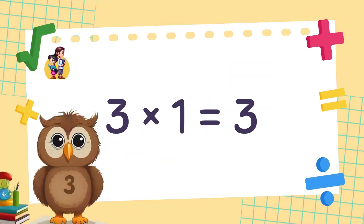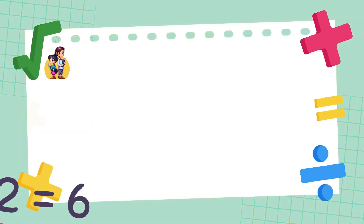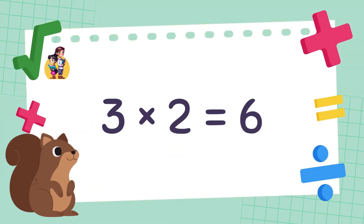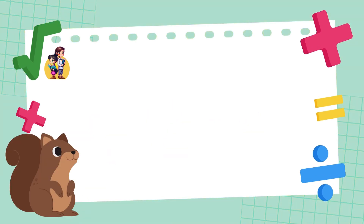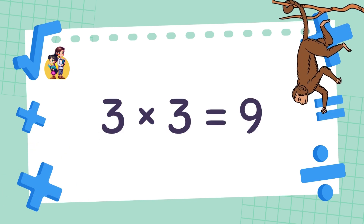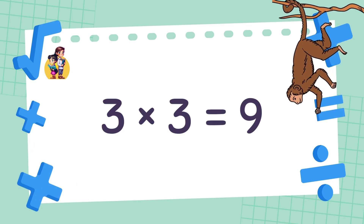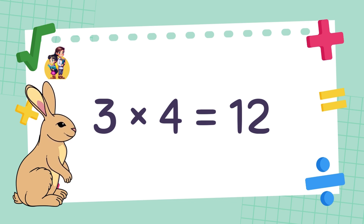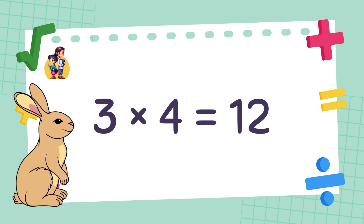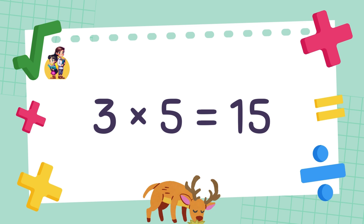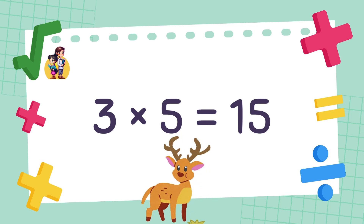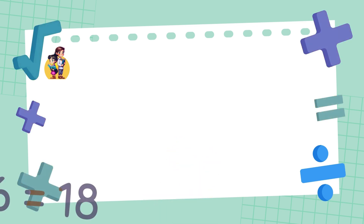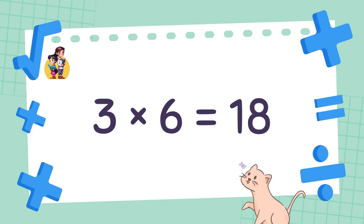3 x 1 is equal to 3. 3 x 2 is equal to 6. 3 x 3 is equal to 9. 3 x 4 is equal to 12. 3 x 5 is equal to 15. 3 x 6 is equal to 18.